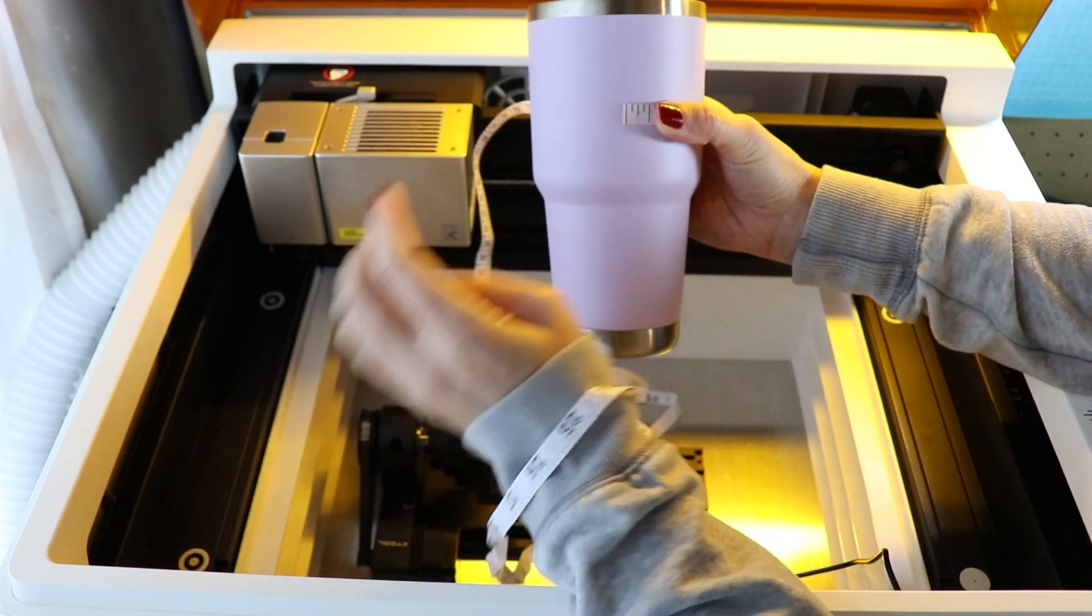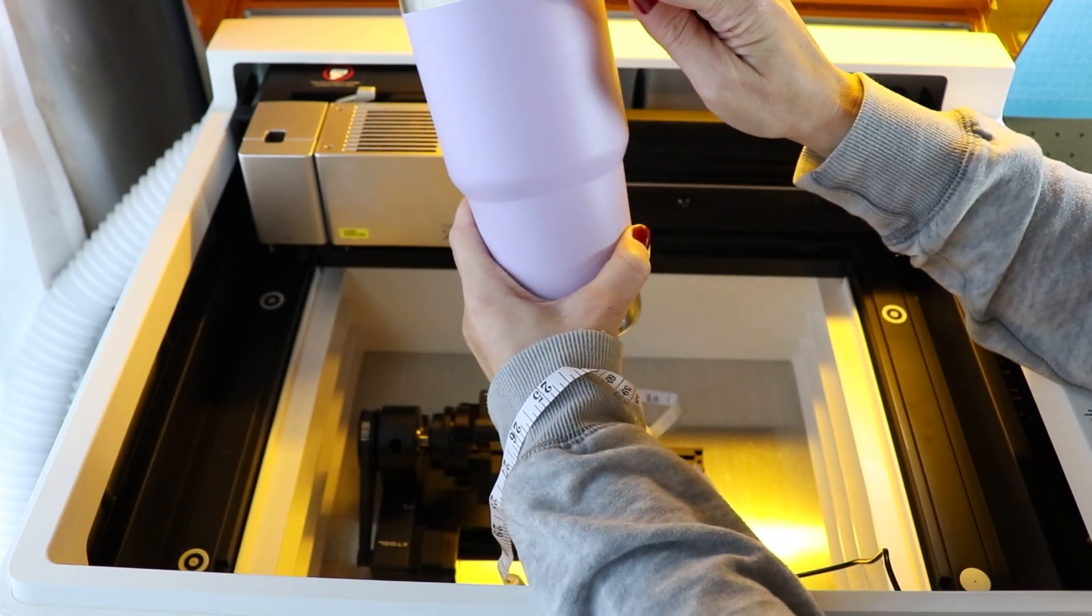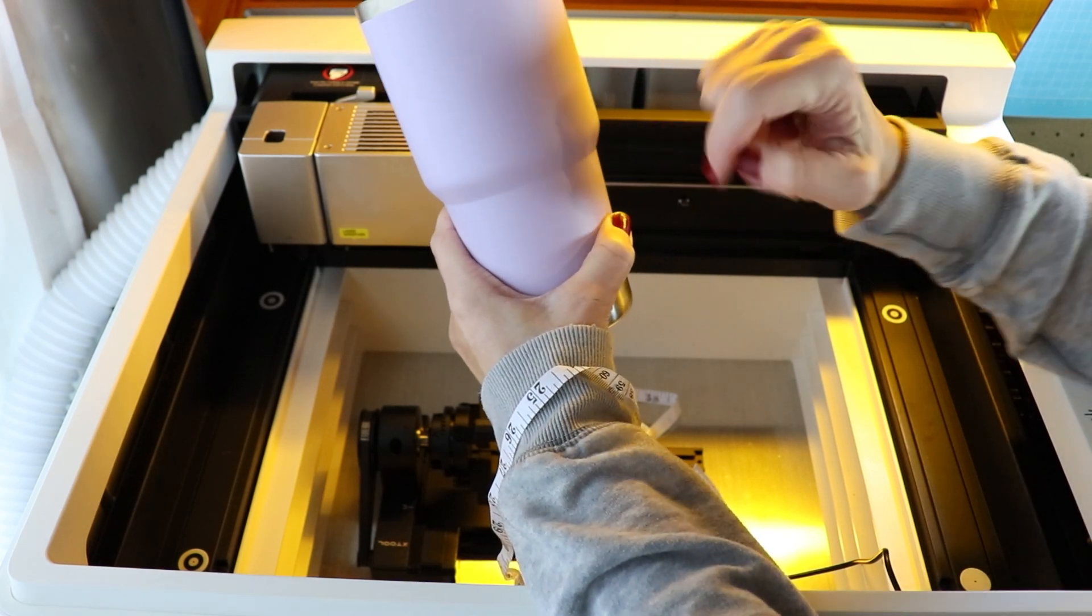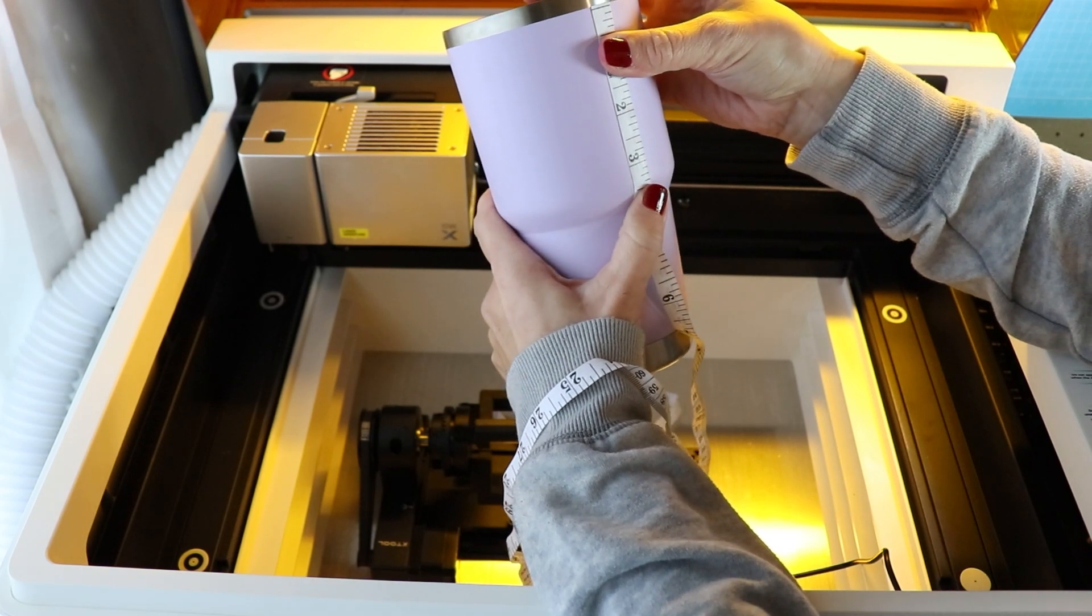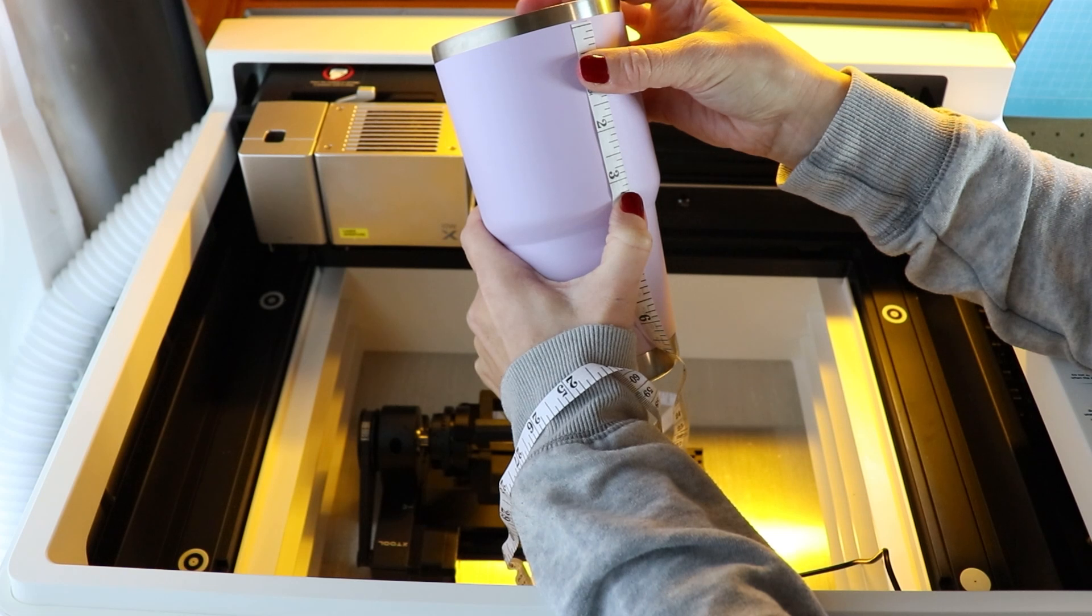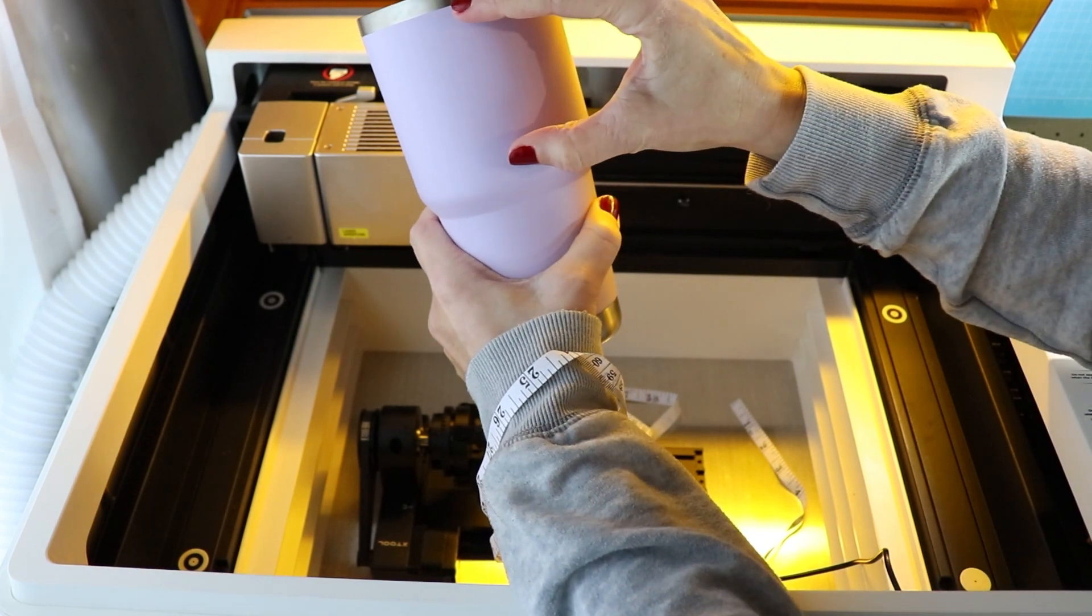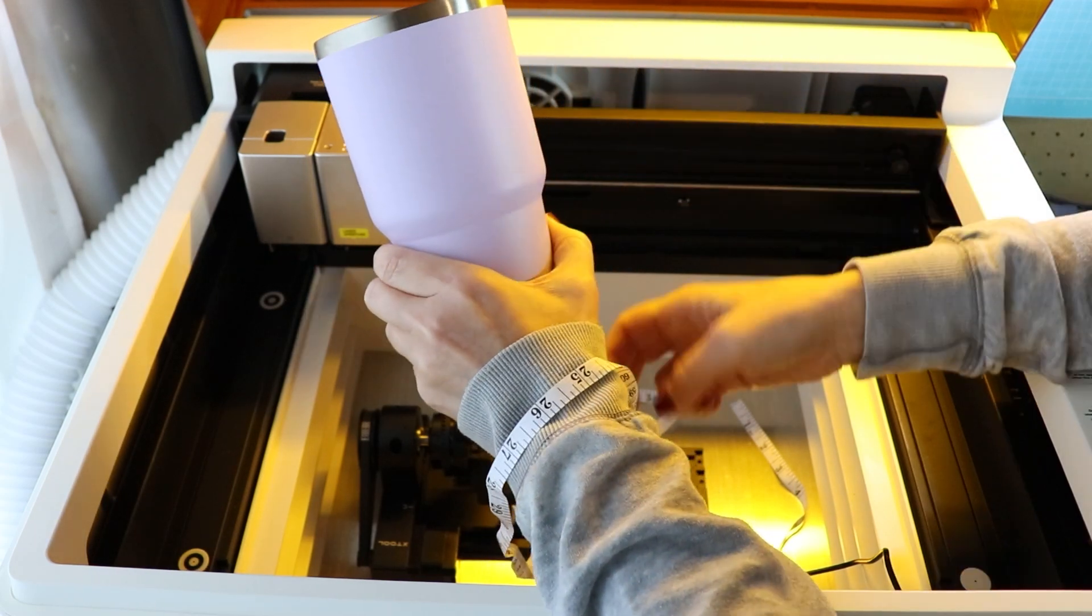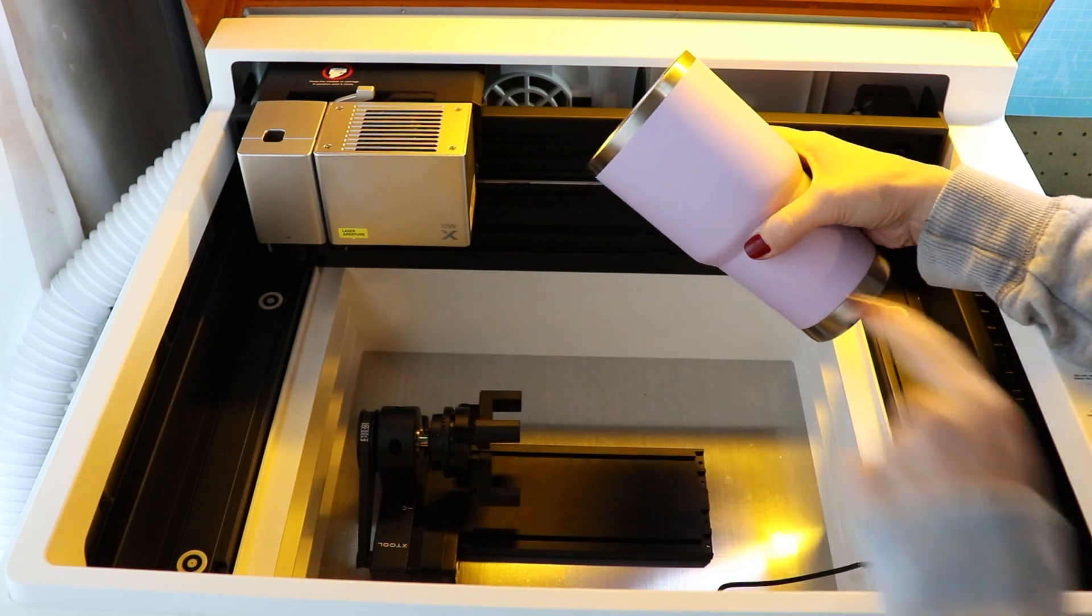So 12 and a quarter I need to write down. The other thing I want to write down is the measurement of right where the powder coating starts and right where the taper starts. That is about, I'm going to say, three and a quarter inches. So with those two measurements, I want to engrave the entire perimeter of this top part right here. So now I can go ahead and put it onto my chuck.